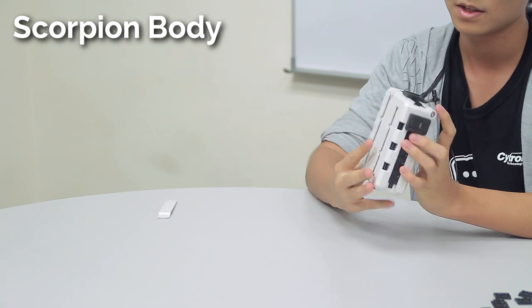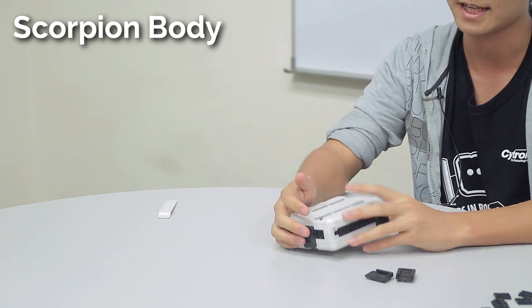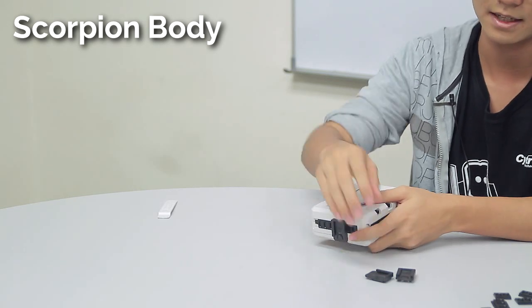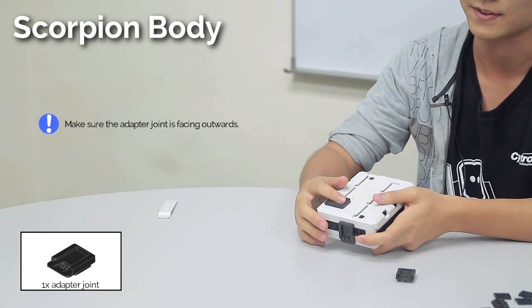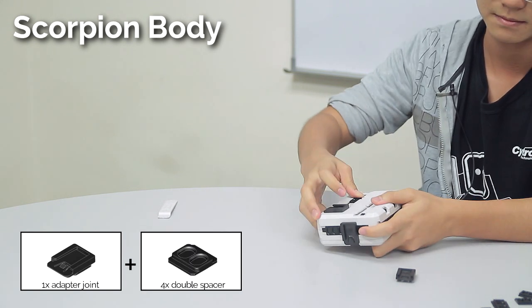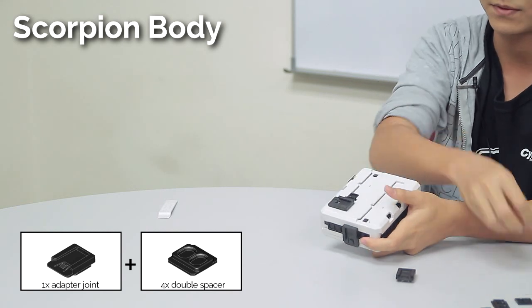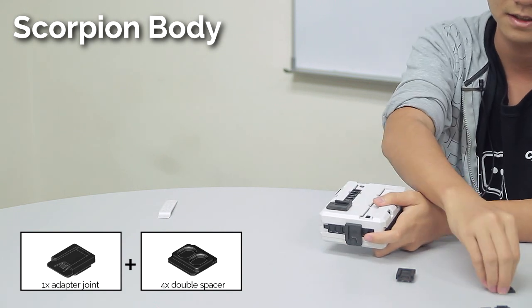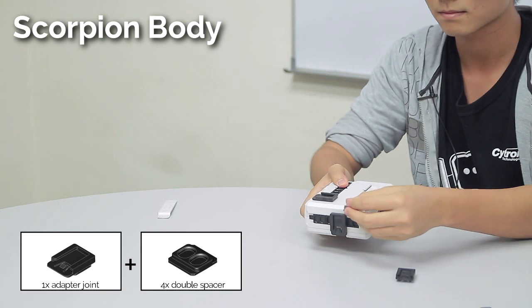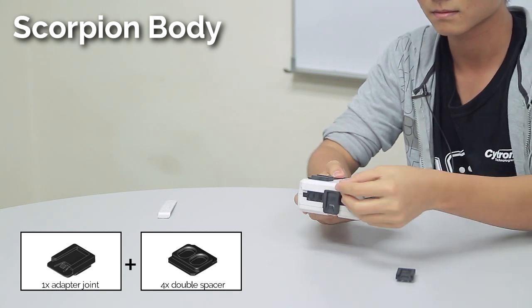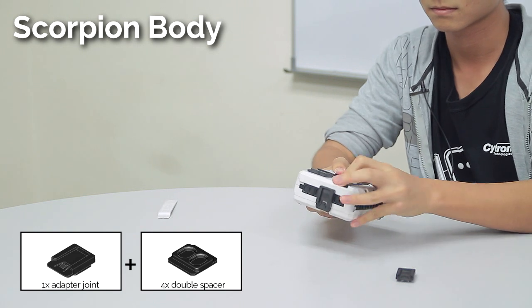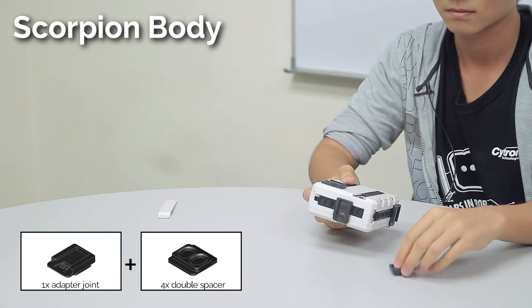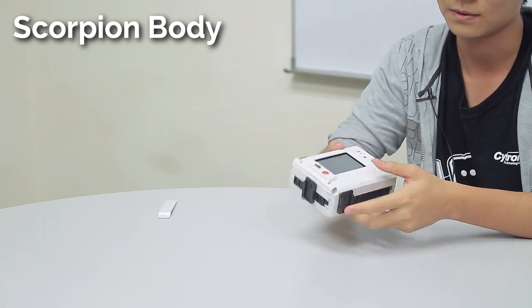Now for the bottom, we're going to slot in two adapter joints at this side, the side where the tail should be. For this side, slot in the adapter joint first. Make sure the adapter joint is facing outwards to avoid problems. Then repeat for the other side: one adapter joint and four double spacers. And with this, we're done.